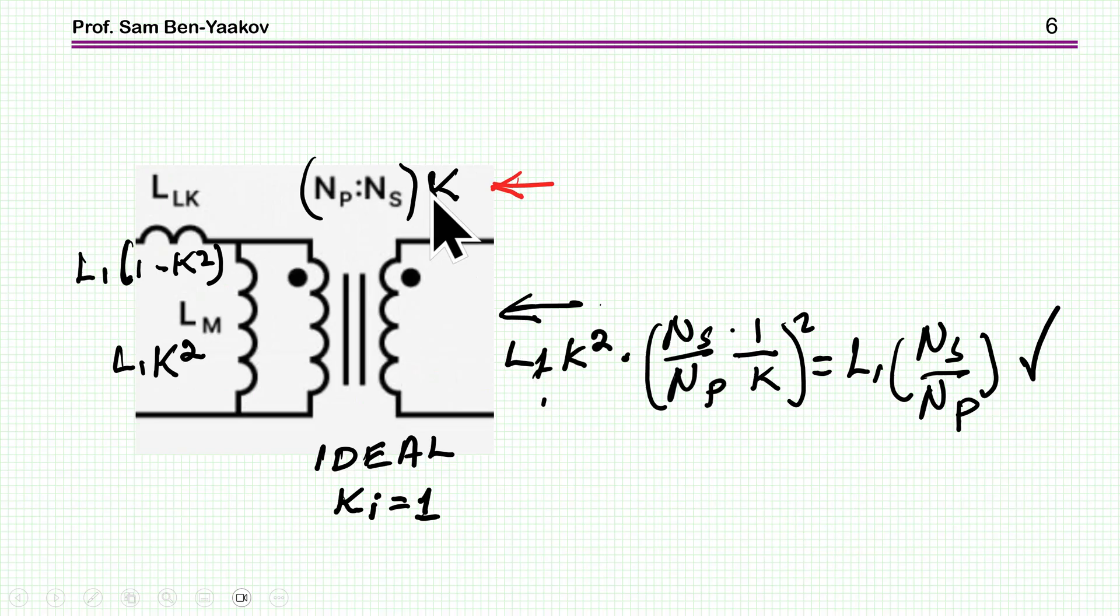Now, if I add this k here, then when I look at the secondary, what I see is this part here reflected to the secondary. So this is L1 k², this is here.